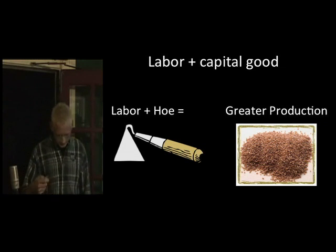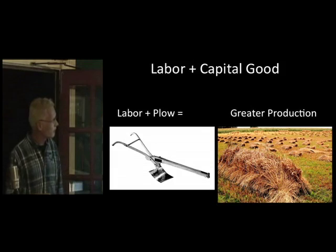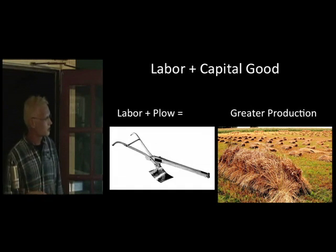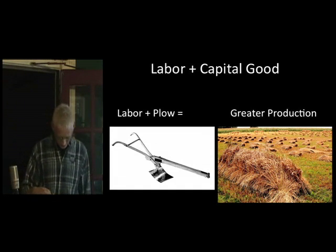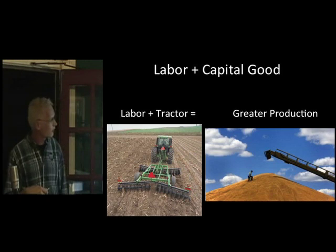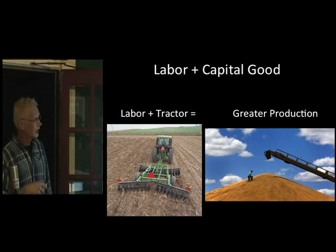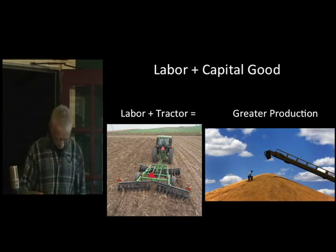And then he invests further in capital goods — one man with a plow — and that increases his efficiency of production even more. And then, of course, one man with the capital good of a tractor. And you have super abundance there.